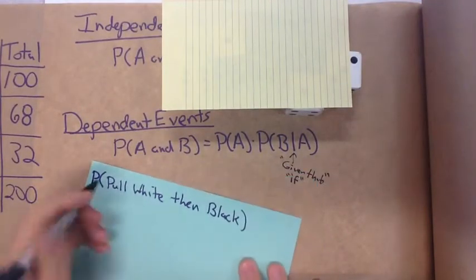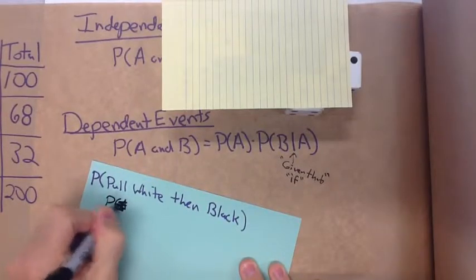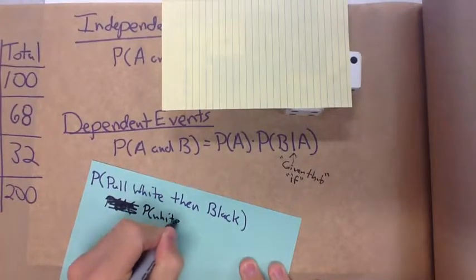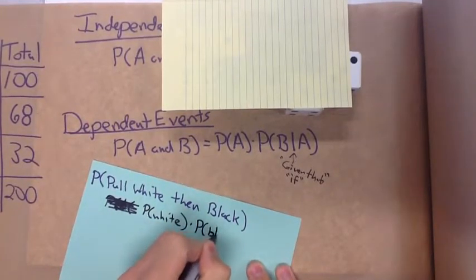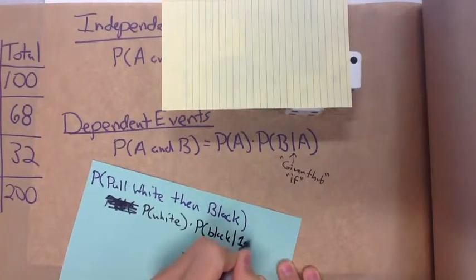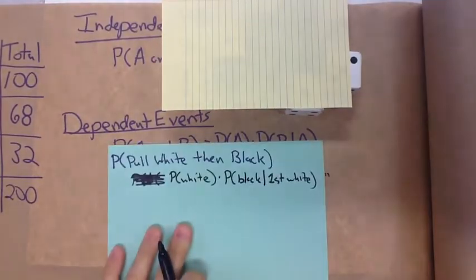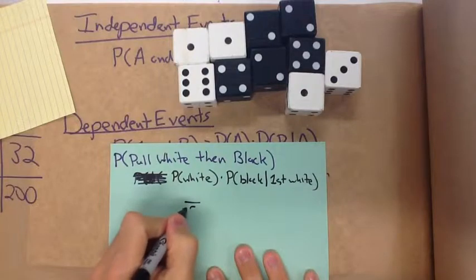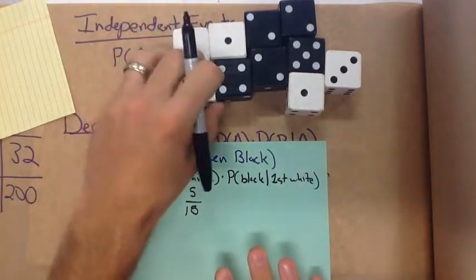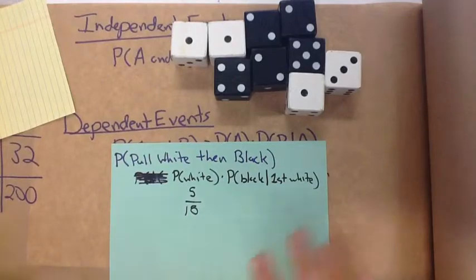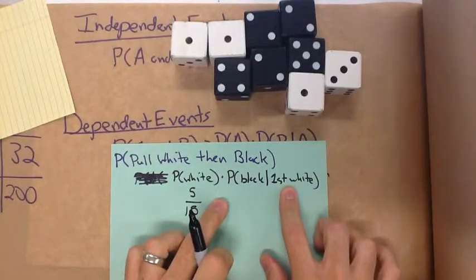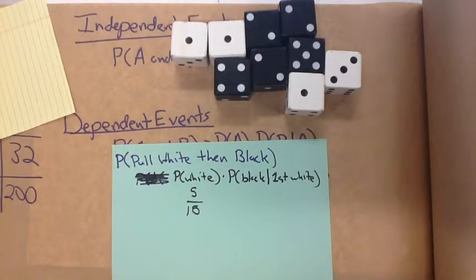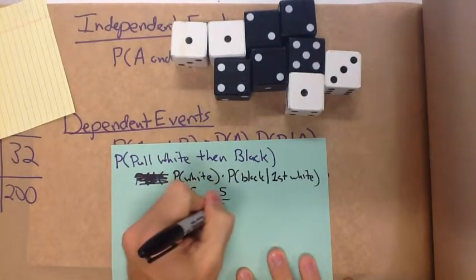Pull a white then a black. So it's going to be the probability of white times the probability of a black given that the first was white. What's the probability of us pulling a white from the beginning? I have ten total, so it's going to be five of them are white. Now if I pulled that white away, and now I've done that first probability, that first event, now what's the probability I pick a black of what's left, of the first one being white, that's now gone? I have five out of nine.